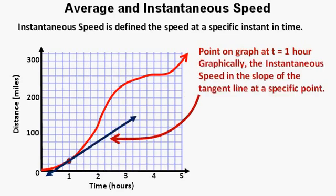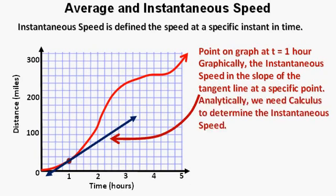Graphically, the instantaneous speed is the slope of the tangent line at a specific point. And analytically, we need calculus to determine this instantaneous speed.